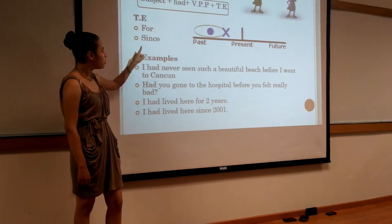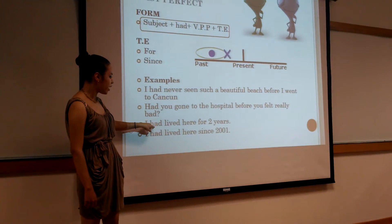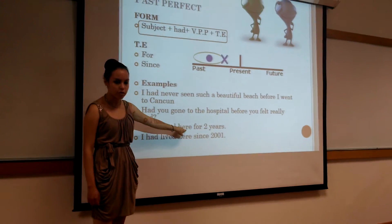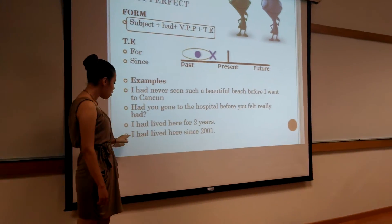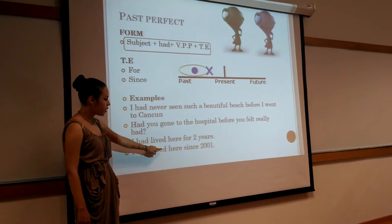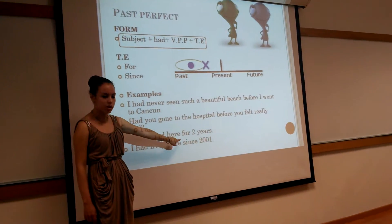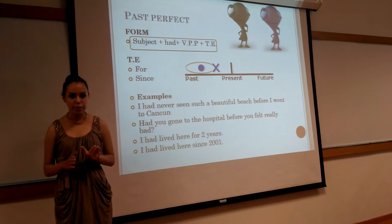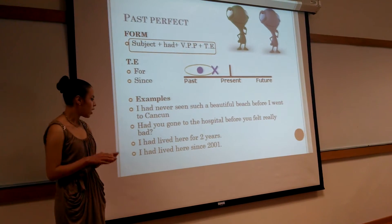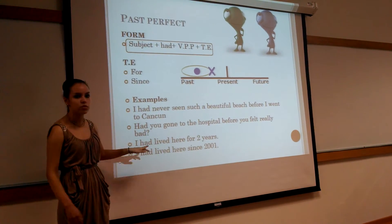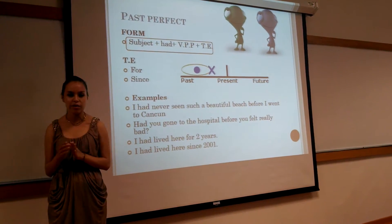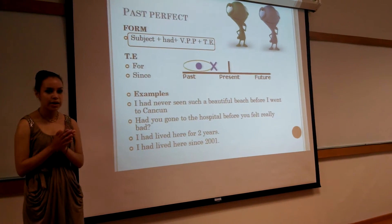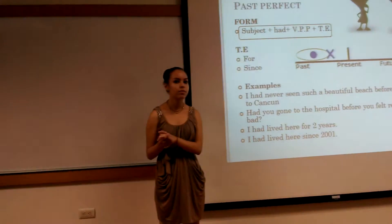Using the time expression: I have lived here for two years, or I have lived here since 2001. You use 'for' with a period of time and you use 'since' when there is a specific beginning point.